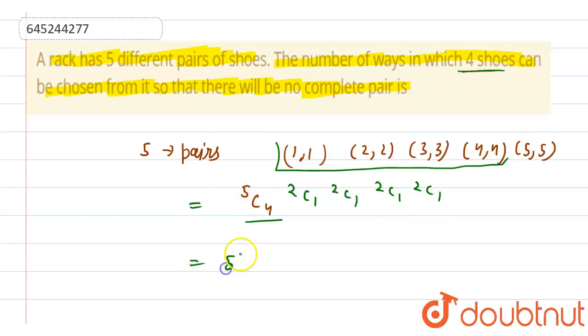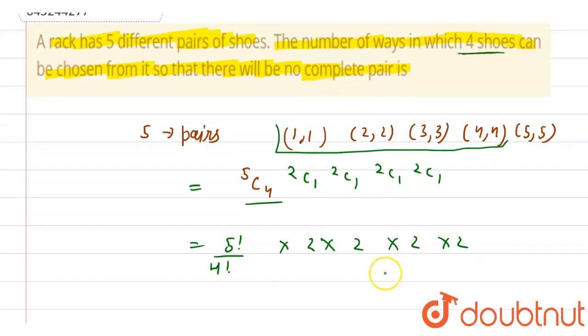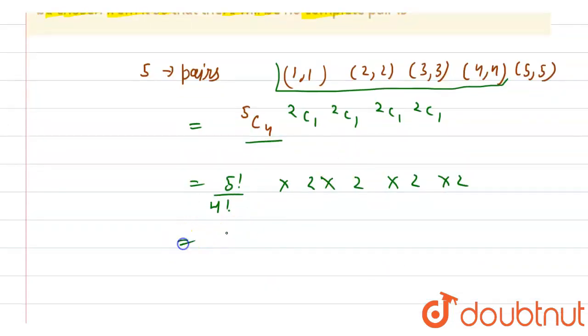Now let's calculate this. So it will be 5 factorial divided by 4 factorial, which is 5C4, times 2C1, which will be 2, times 2, times 2, times 2. This is what we have. Now if I calculate, it will become 5 times 2 times 2 times 2 times 2.